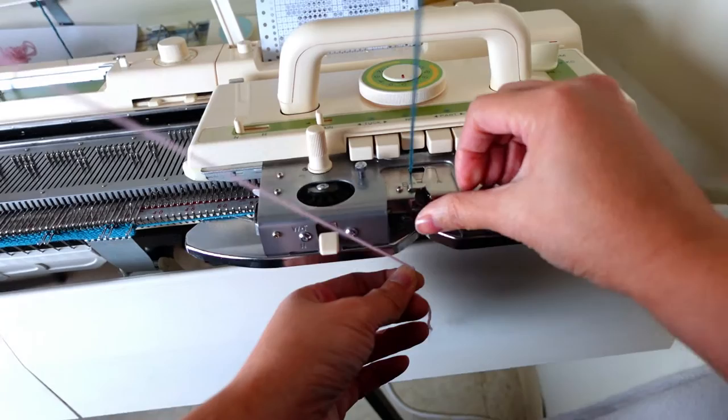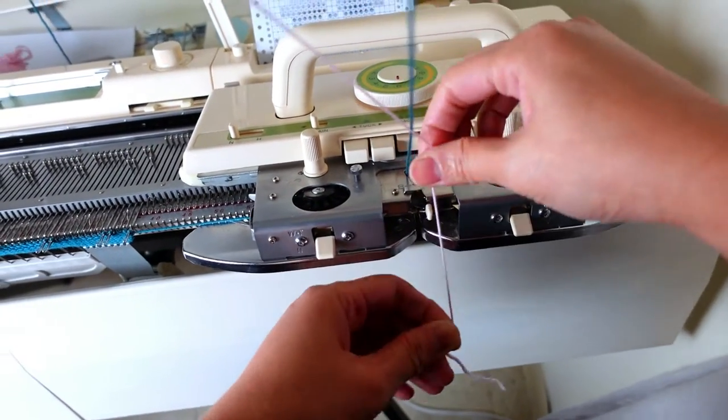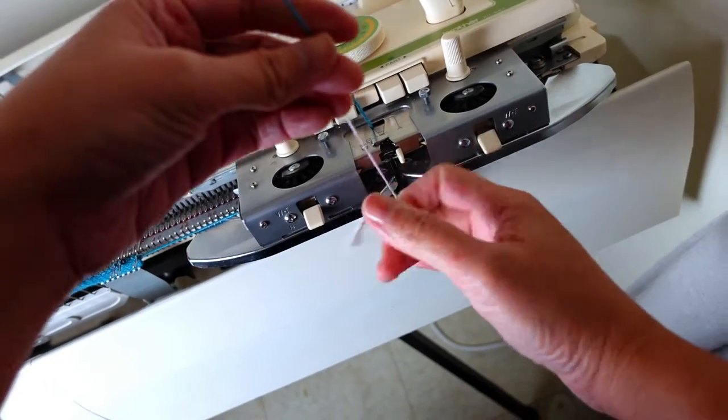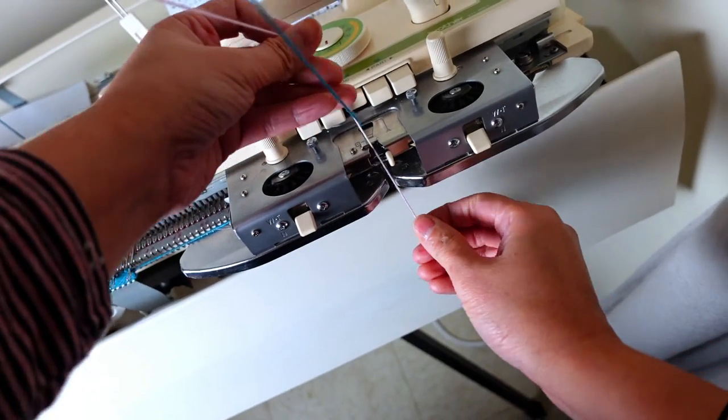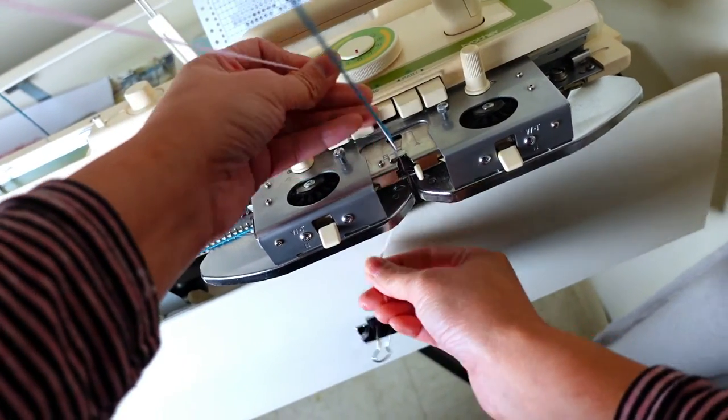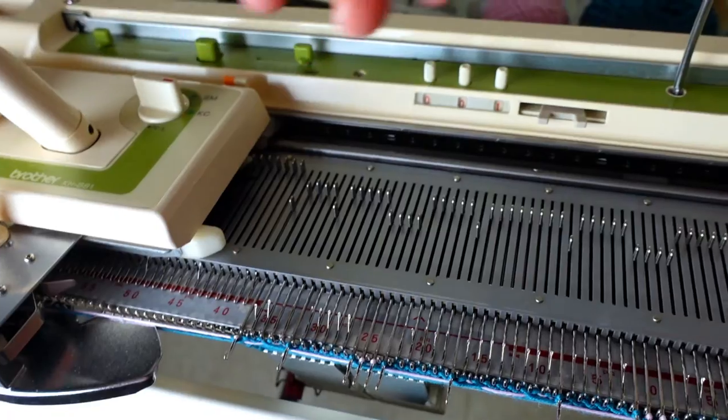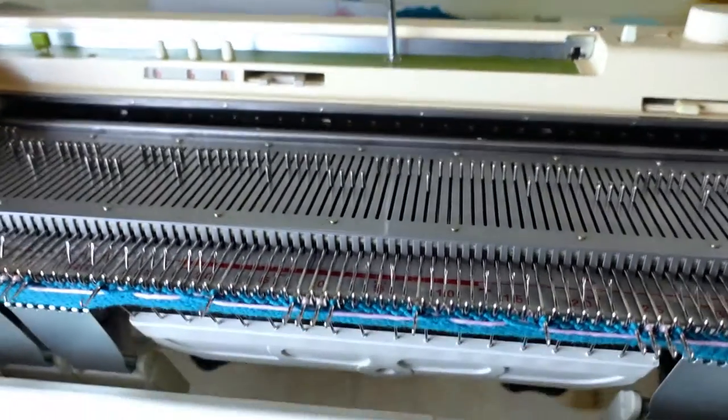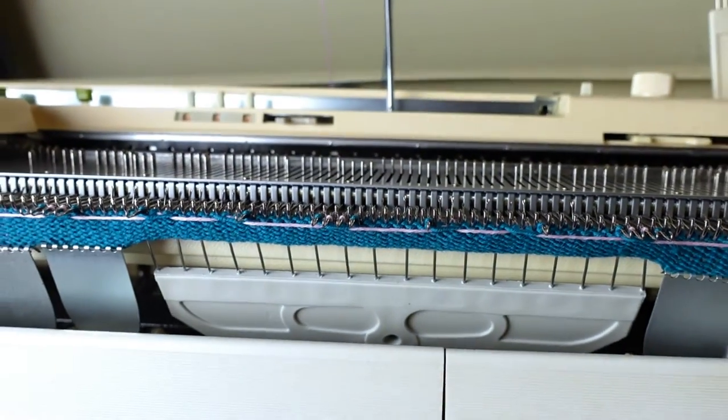And thread the second yarn to the B position. That's the one outside of the slot A. Now set the row counter back to zero zero zero. And we can start to knit back and forth.